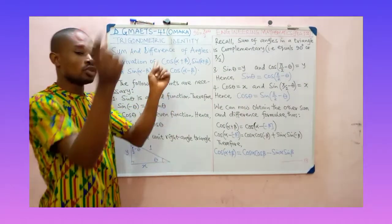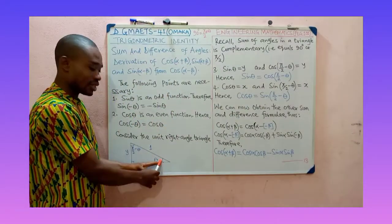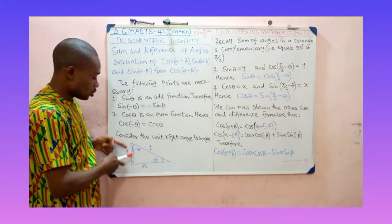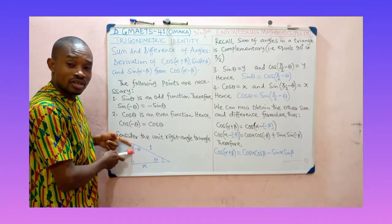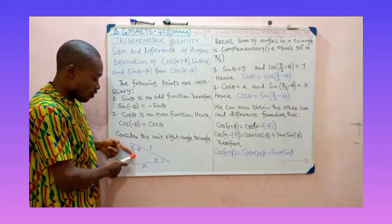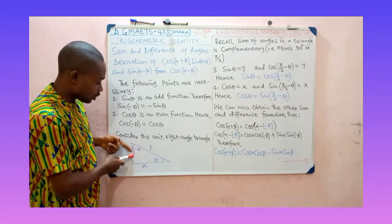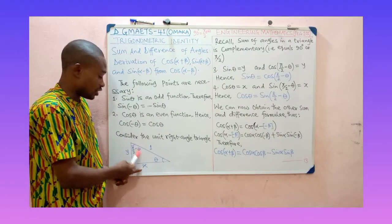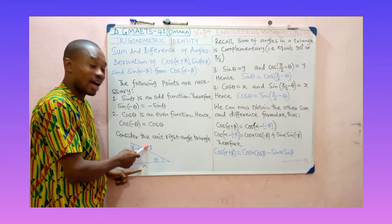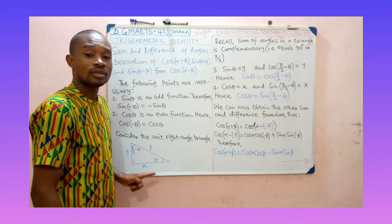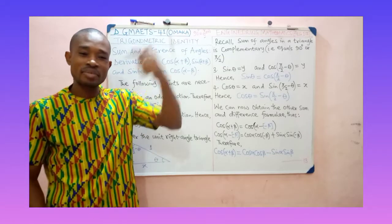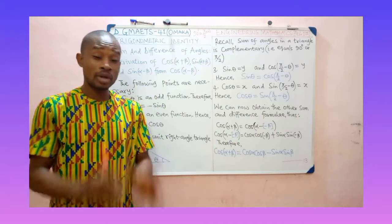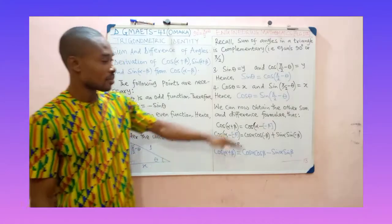The same thing happens going the other way: cos θ gives you x, and sin(π/2 − θ) also gives you x, because x is the opposite side to that complementary angle over hypotenuse 1. So cos θ = sin(π/2 − θ).